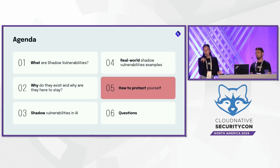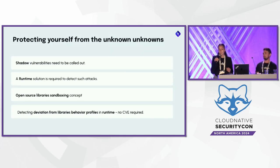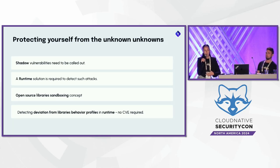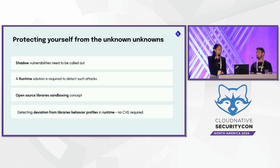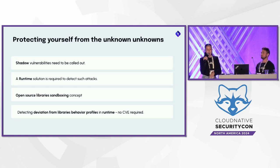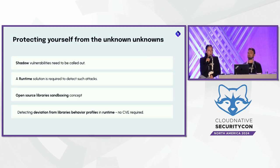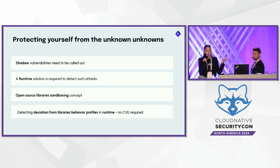Now let's talk about how to protect yourselves from shadow vulnerabilities. We believe shadow vulnerabilities need to be called out — we should keep maintainers to fix them and make developers aware. It's a community effort. We believe they are here to stay and will always exist, so a runtime solution is needed for detecting them. Why runtime? Because shadow vulnerabilities have no CVEs — all those scanning tools running at build time on the left side are simply not enough. Shadow vulnerabilities are invisible to them.